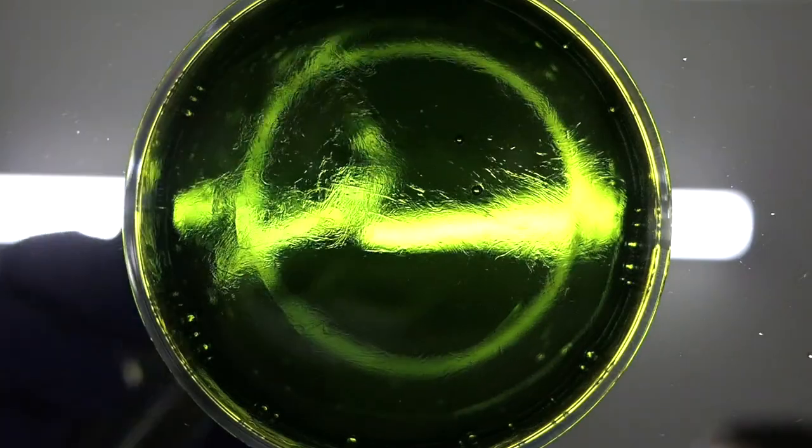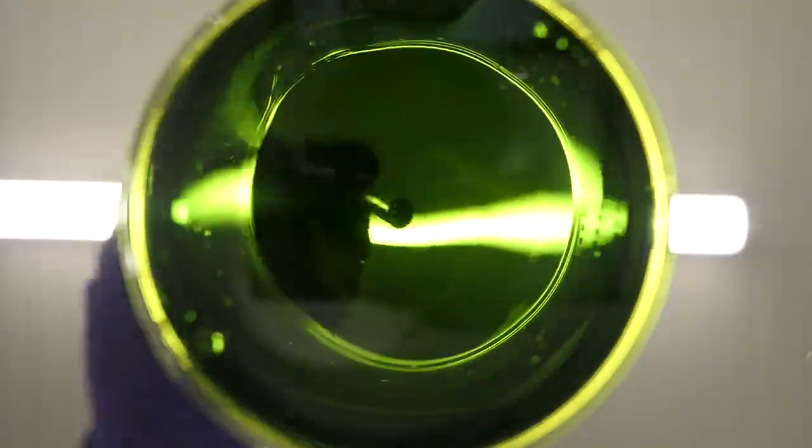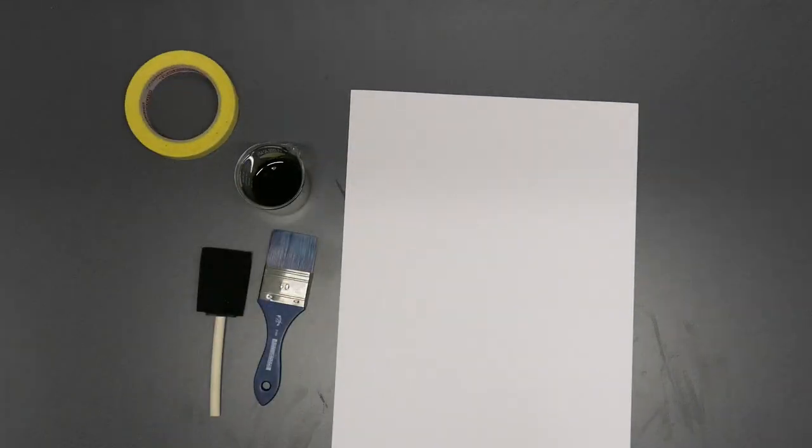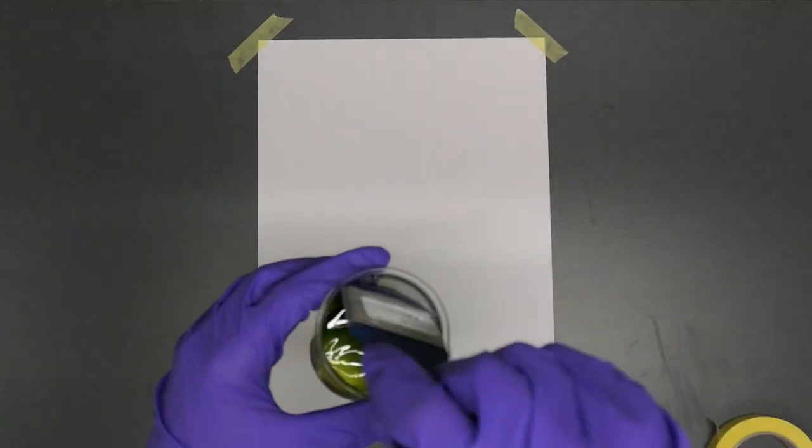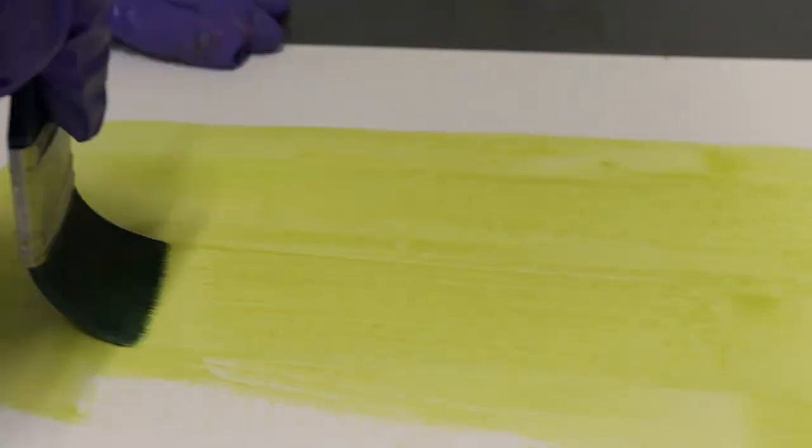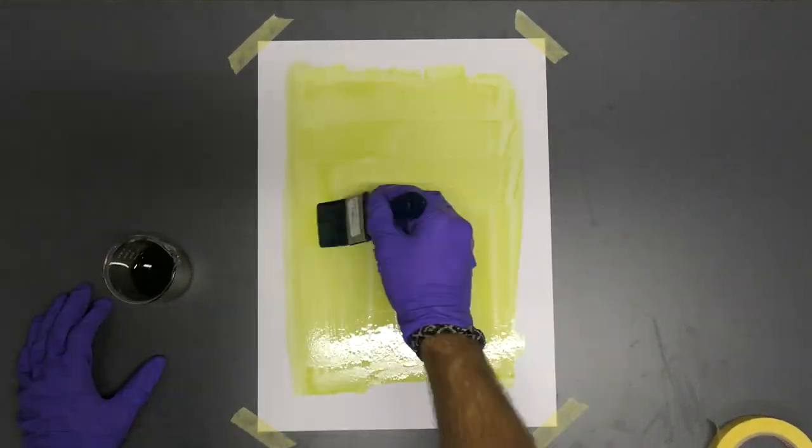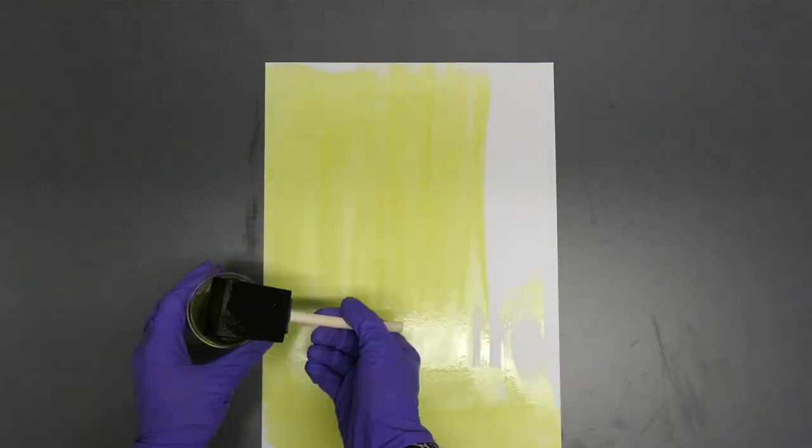Now that both A and B solutions are mixed, the mixture is sensitive to UV light. Now it's time for coating. Prepare yourself cyanotype solution, brushes, paper, and a flat surface. Sometimes I use masking tape. It secures the paper and makes the coating easier. Try to spread the solution evenly. If you want, you can also coat the paper all the way to the edges.